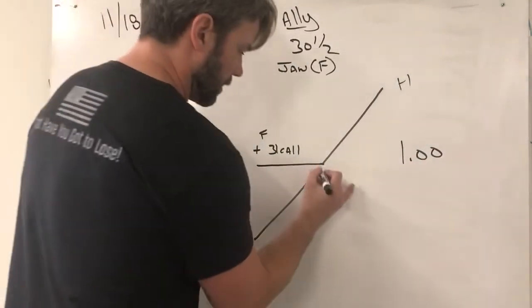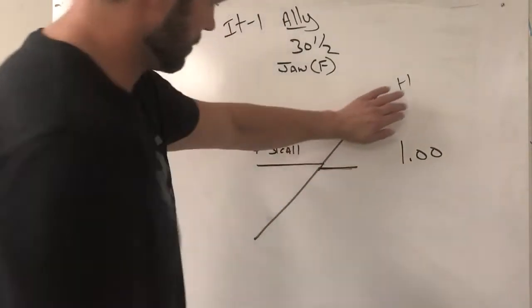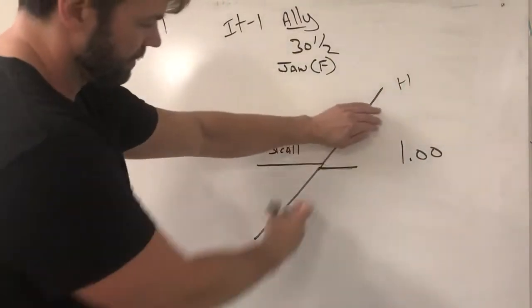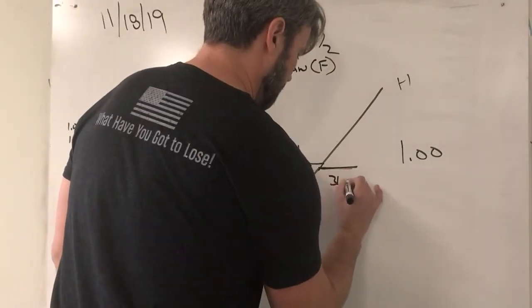Then we are gonna sell, this is actually connected, we're gonna sell a put. This is a graph of selling a put right down here. Positive one slope when you sell put. This is also the 31 put.